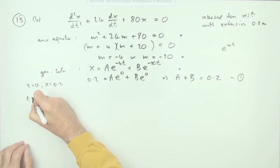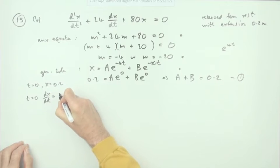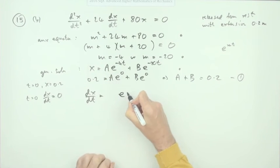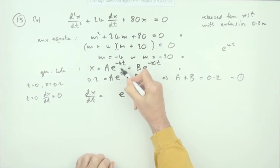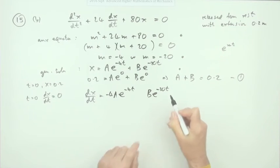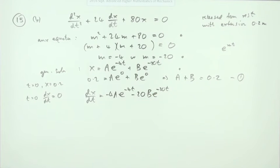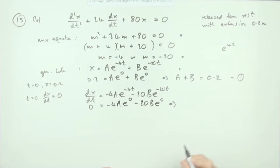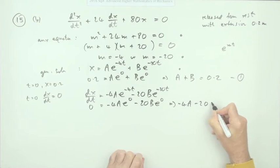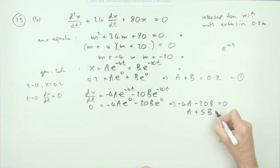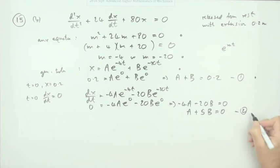The second condition is that at t = 0 the velocity dx/dt = 0. Differentiating: dx/dt = −4Ae^(−4t) − 20Be^(−20t). Substituting t = 0 gives −4A − 20B = 0. Dividing by −4 and rearranging gives A + 5B = 0. That's the second equation.